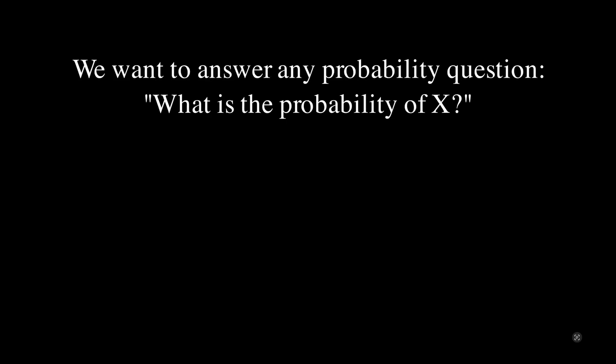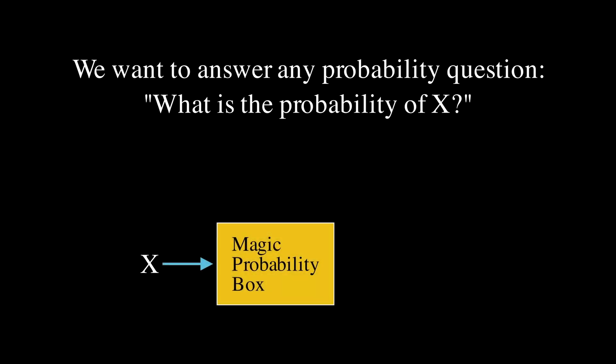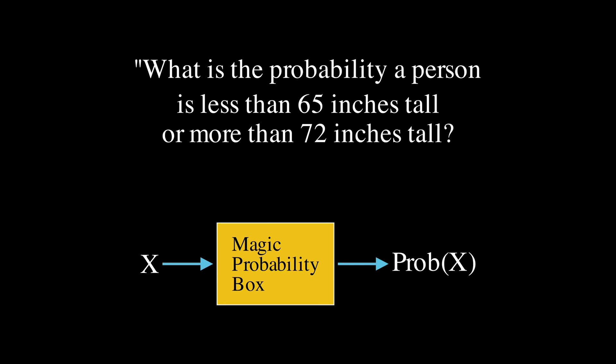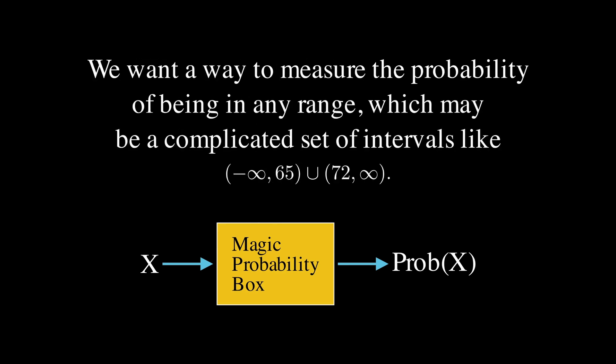In probability, we want to be able to answer any probability question, like what is the probability of X, some event happening. What we want is to ask the question X to a magic probability box that will output the probability of that event. For instance, we might want to ask what is the probability a person is less than 65 inches tall or more than 72 inches tall. We want a way to measure the probability of being in any range, which may be a complicated set of intervals.